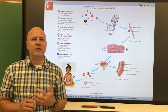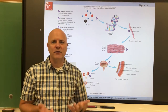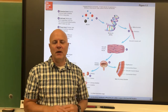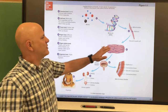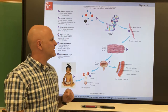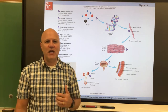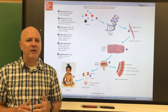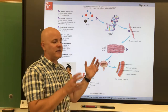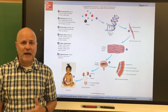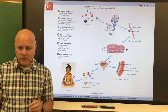Above the organelle level is the cellular level. A cell is the structural and functional unit of an organism — we are composed of trillions of cells, and the cell is the smallest unit of life. If we take a bunch of similar cells and put them together, we have the tissue level. A tissue is a group of similar cells that have a common function. Smooth muscle tissue, for example, contracts.